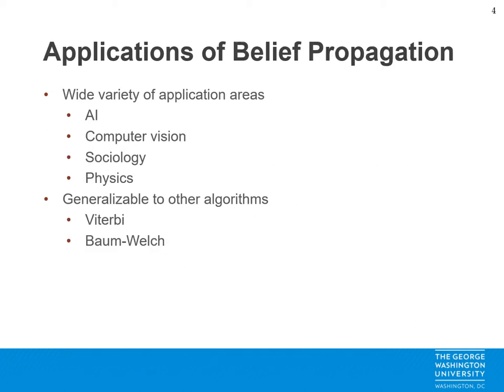So where is belief propagation used? AI uses it with neural networks and hidden Markov models; computer vision with object detection and image correction; physics with heat, energy, and electricity flows; and sociology with rumor propagation and social network modeling. It is generalizable to other algorithms including the Viterbi algorithm for modeling the most likely sequence of events given their probabilities, and also the Baum-Welch algorithm for estimating the parameters of a hidden Markov model.